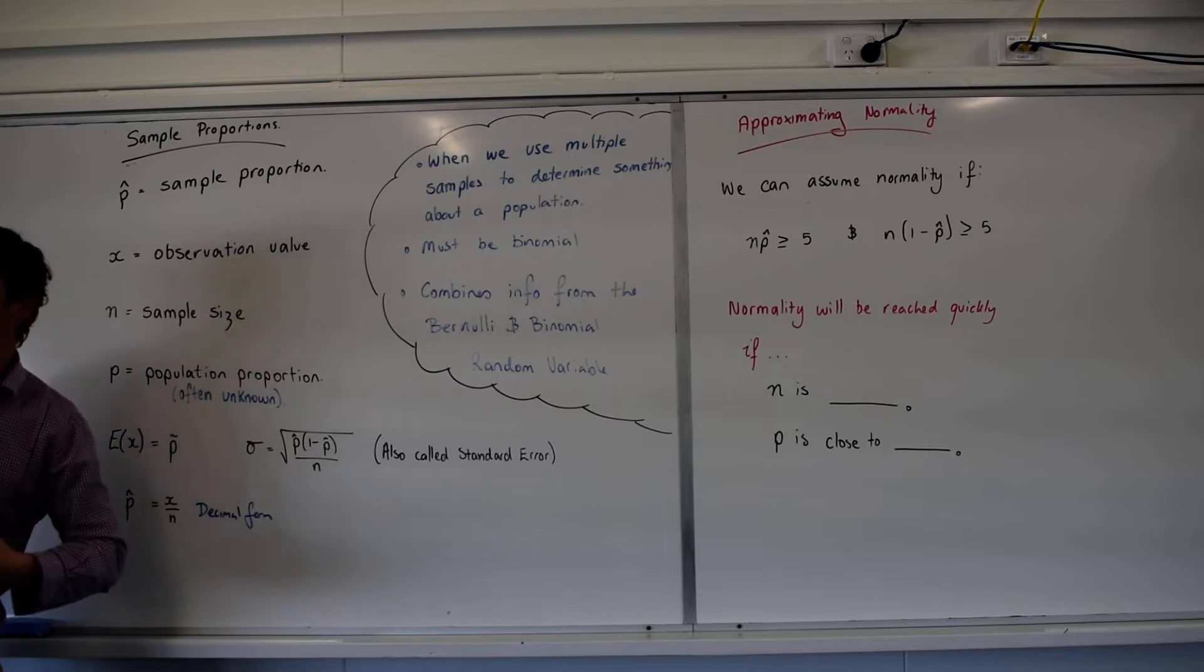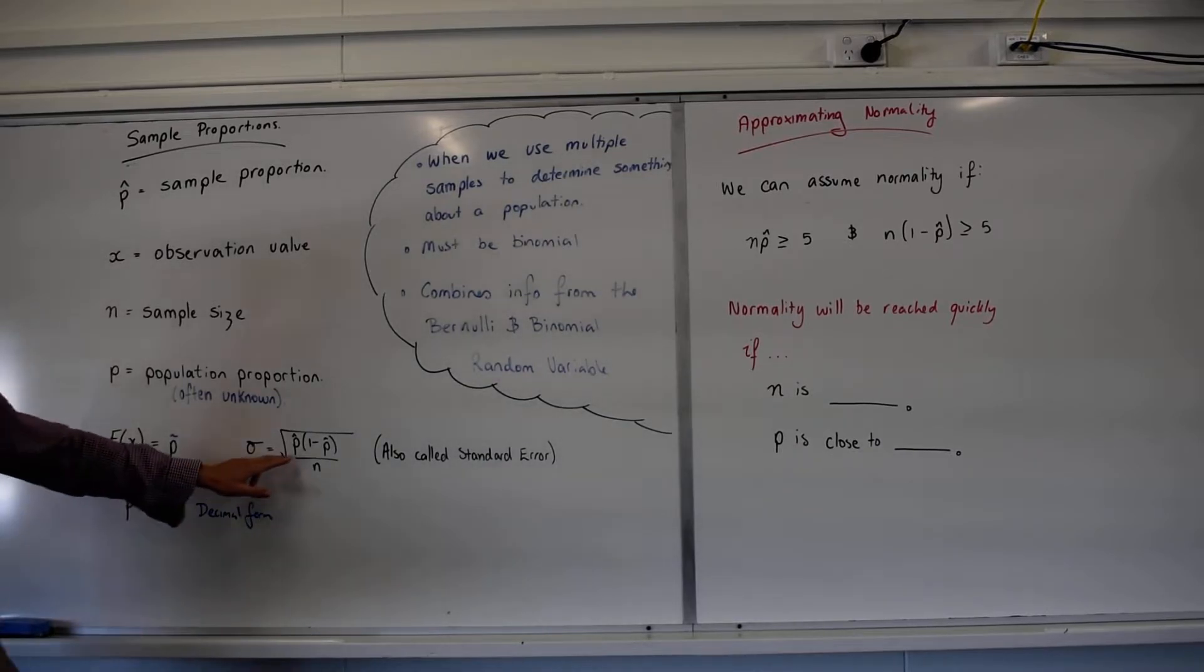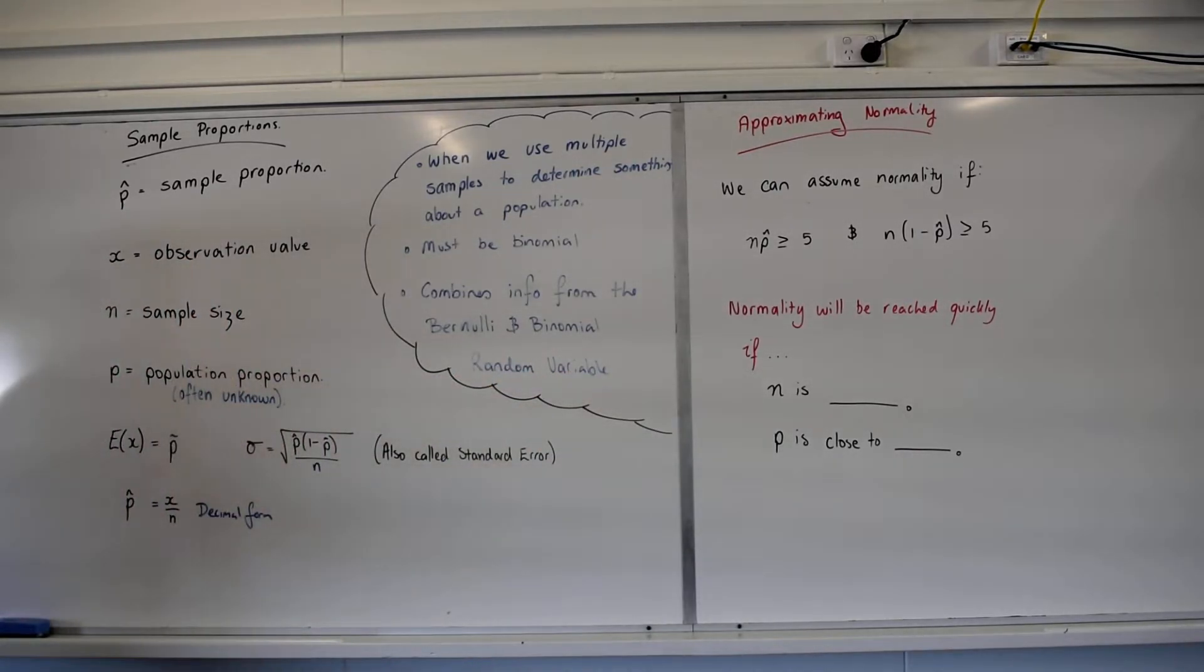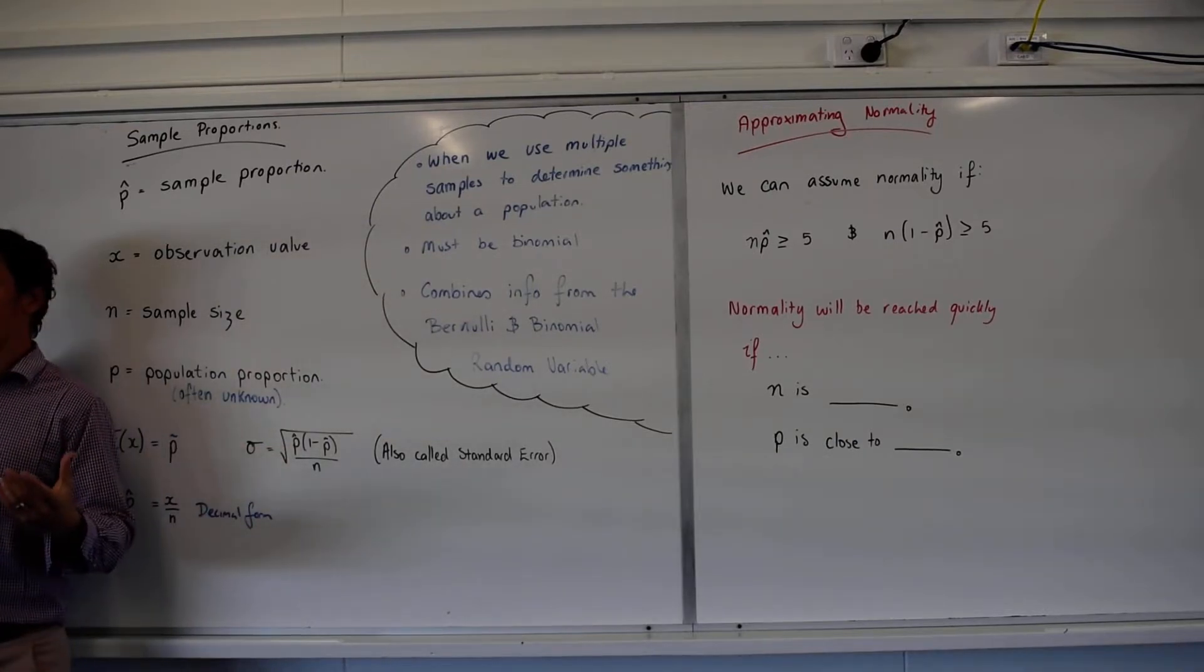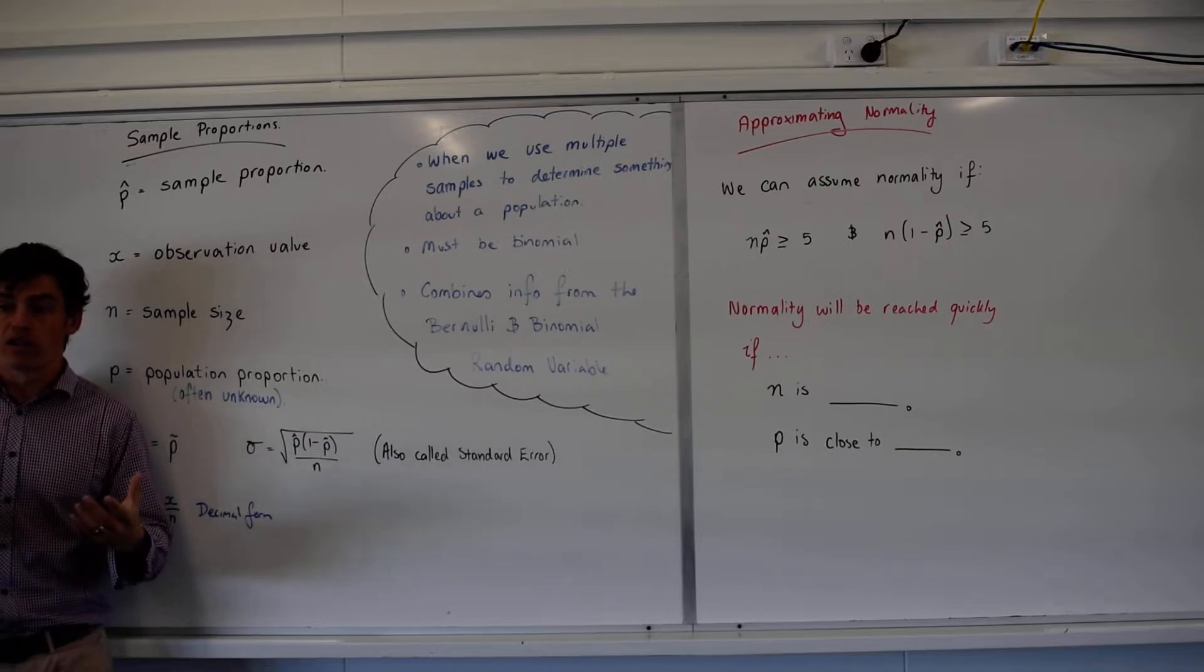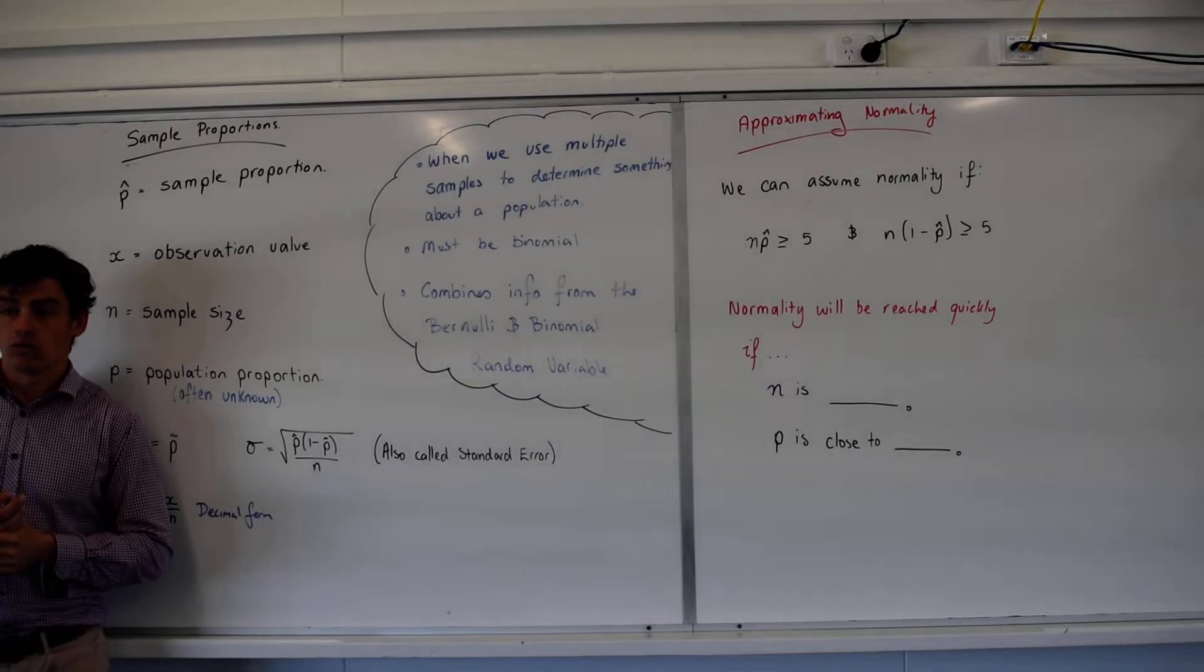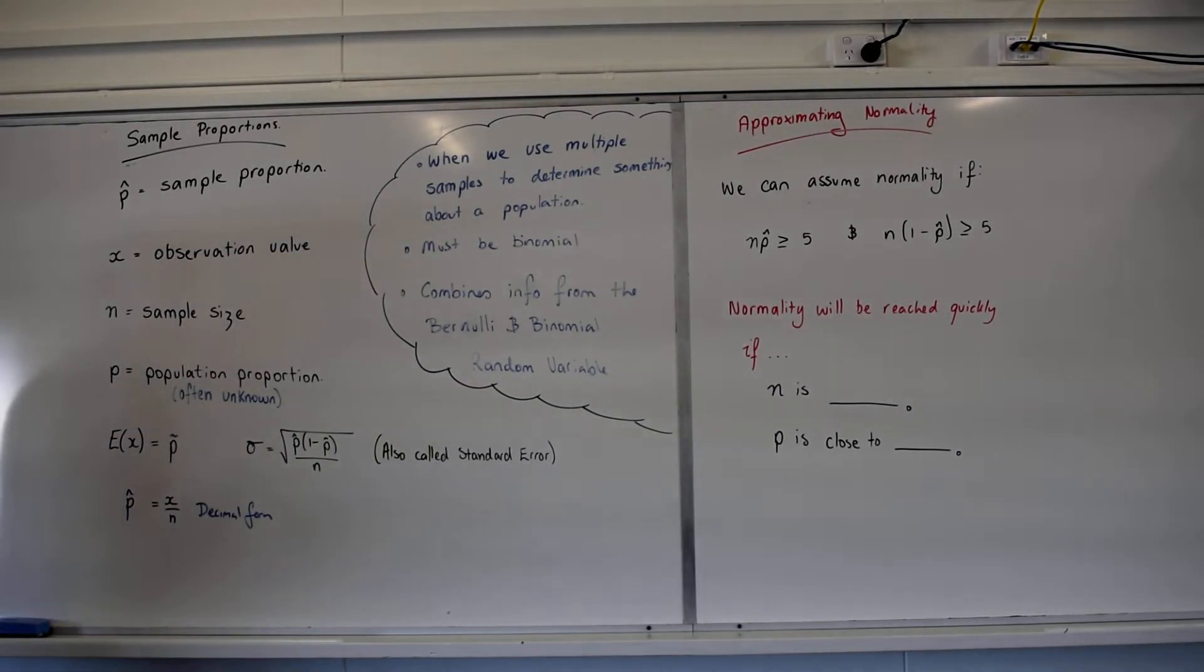And as we'd expect with our standard deviation, the bigger our sample size, the smaller our standard deviation is going to get. We'd expect that. And with this P(1 minus P), we're going to address it over here, but essentially what that means is the closer our value is to a 50-50 split, the bigger the standard deviation. The more variance we're going to see.